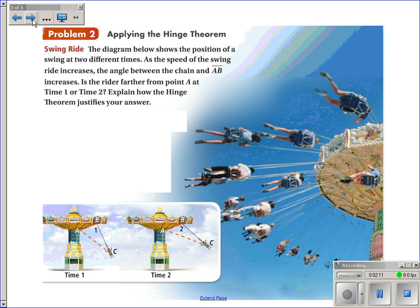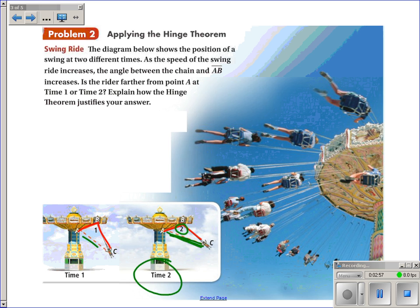One more application of the Hinge Theorem. The diagram shows the position of a swing at two different times. As the speed of the swing ride increases, the angle between the chain and AB increases. Is the rider farther from point A at time 1 or time 2? AB will stay the same and the length of the chain won't get any longer — the only difference is angle 1 and angle 2 are different. At time 2 there's a larger angle, so that distance must be longer. The answer is at time 2 it's longer, by the Hinge Theorem.